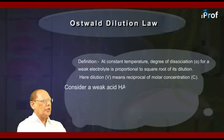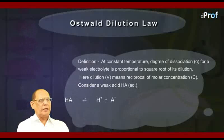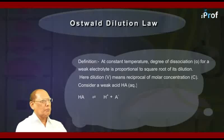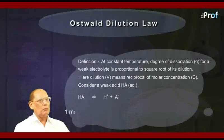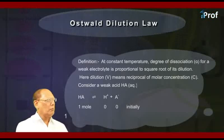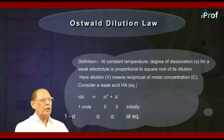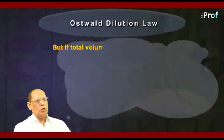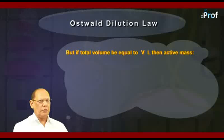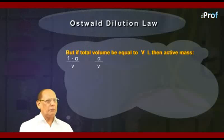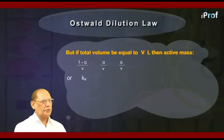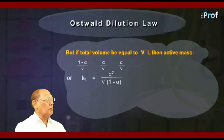Now consider a weak acid HA dissociating into H⁺ and A⁻ ions in aqueous medium: HA ⇌ H⁺ + A⁻. Suppose we have one mole of HA in the beginning, and alpha is its degree of dissociation. At equilibrium it will be (1 − alpha) for HA, alpha for H⁺ ions, and alpha for A⁻ ions. If the total volume of the solution is V liters, then the active mass of each species at equilibrium will be (1 − alpha)/V, alpha/V, and alpha/V.